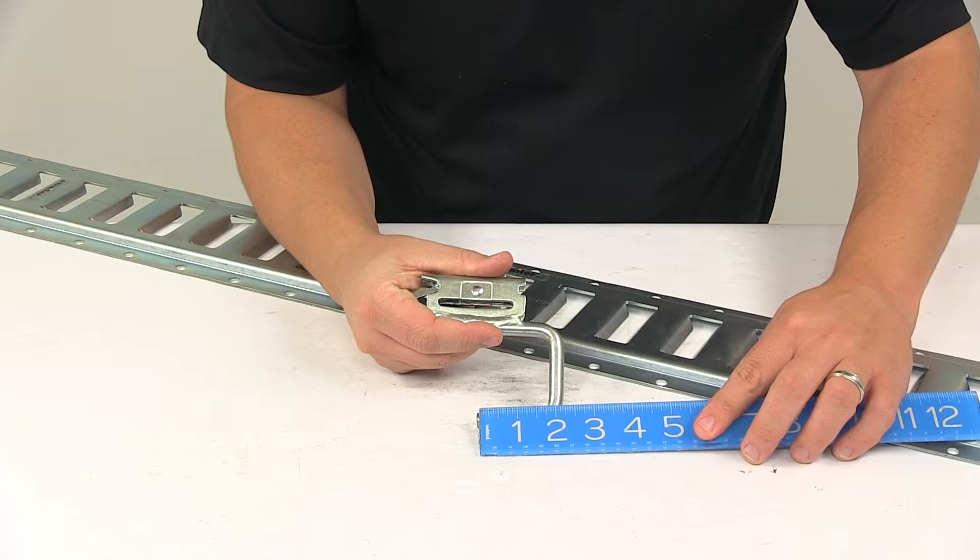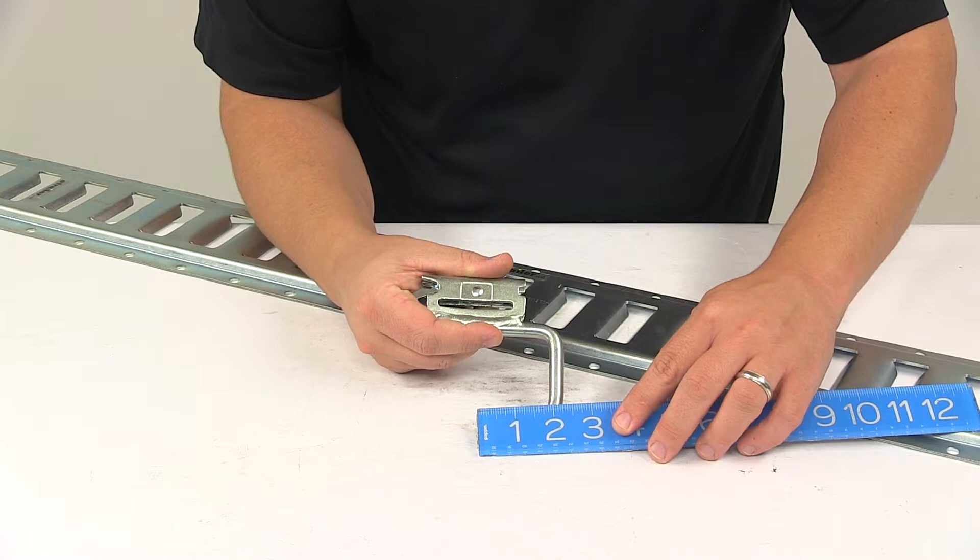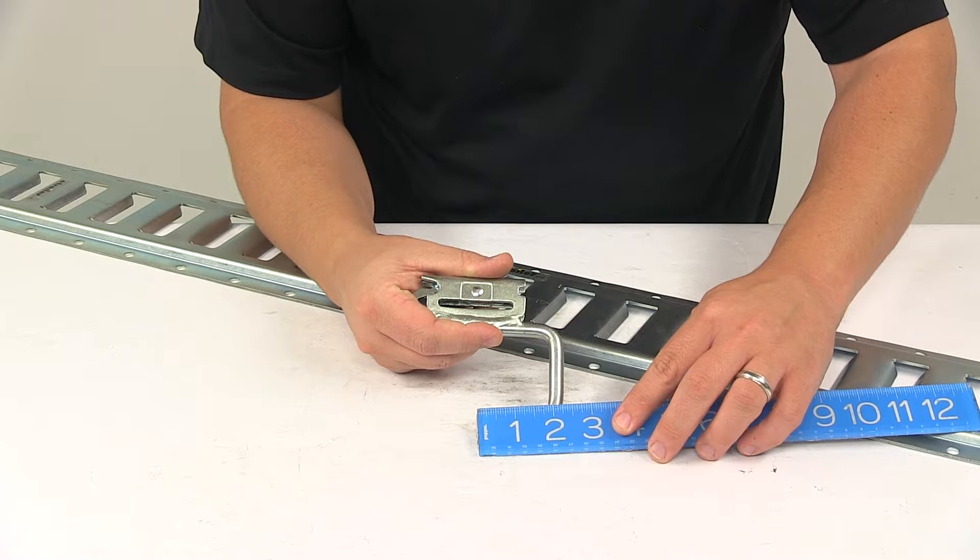The depth from the hook to this portion is about one and seven-eighths inches, and the steel diameter is three-eighths of an inch—a nice durable design.